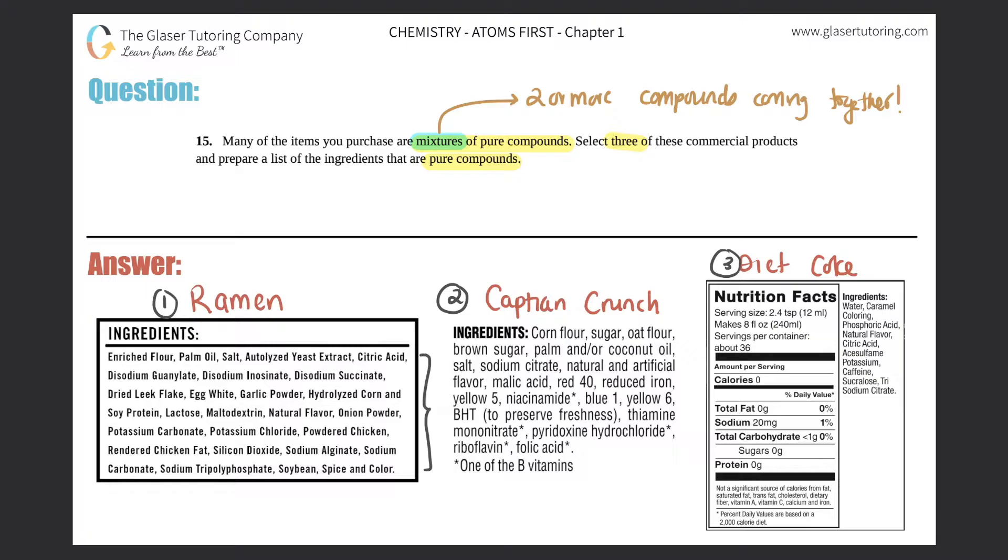These are super complicated mixtures. Look at all of these compounds—they're coming together to make a mixture. Now we just got to select three of them and list them as pure compounds. You could technically just select any of these, but I'm just going to select the ones that would be the easiest to write down.